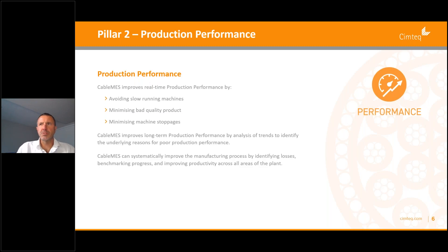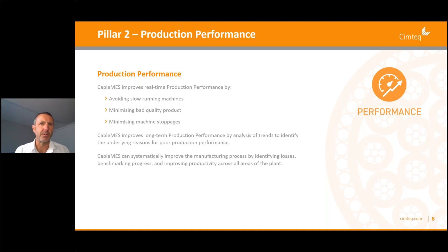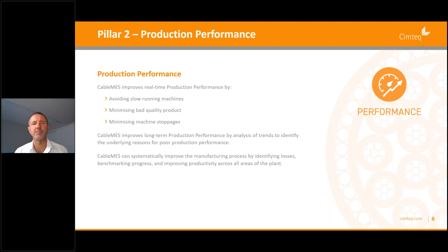Pillar number two: production performance. Cable MES improves real-time production performance by avoiding slow-running machines, minimizing bad quality product, and minimizing machine stoppages. Cable MES improves long-term production performance by analysis of trends to identify the underlying reasons for poor production performance. It can also systematically improve the manufacturing process by identifying losses, benchmarking progress, and improving productivity across all areas of the plant.